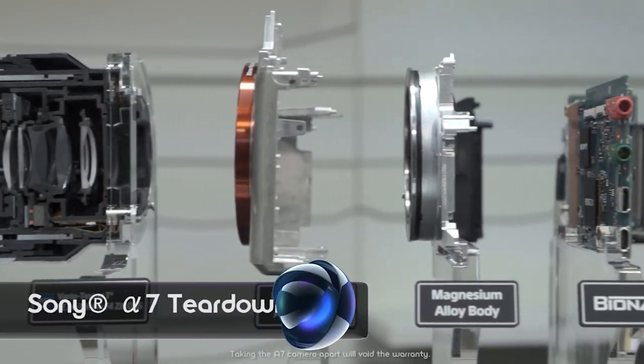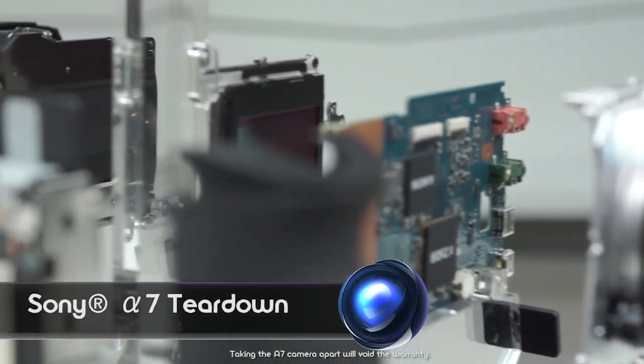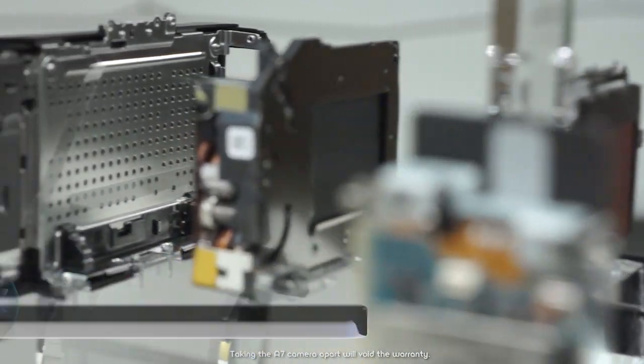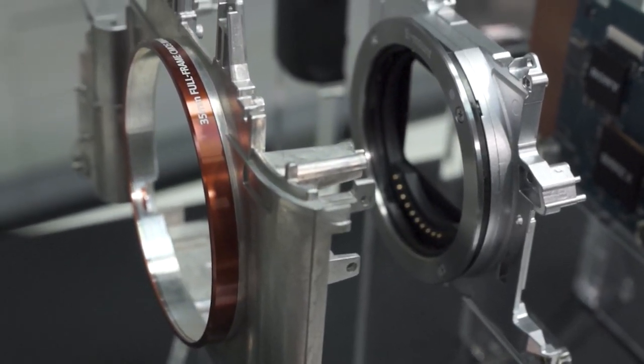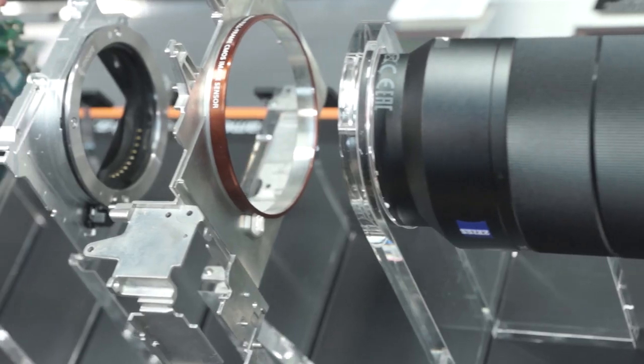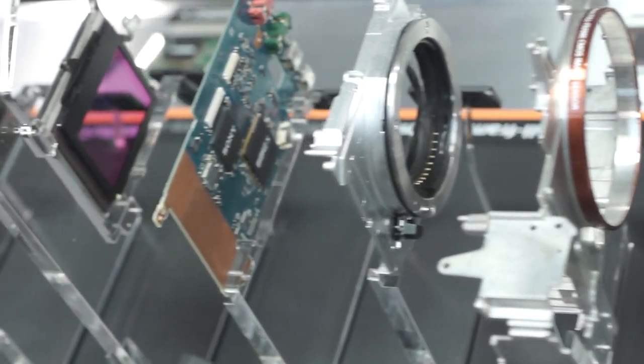Welcome to another signal teardown. Today we're showing you the inside guts of Sony's Alpha 7 mirrorless camera. There's a lot going on under the hood of this 35 millimeter full-frame camera, and today we're going to show you exactly what it takes to build it. Let's go.